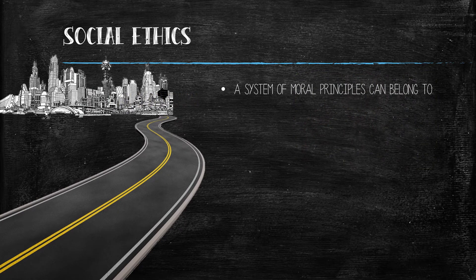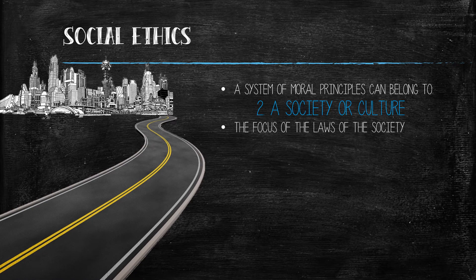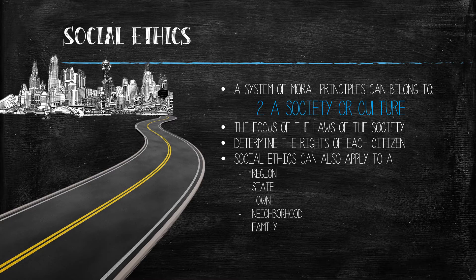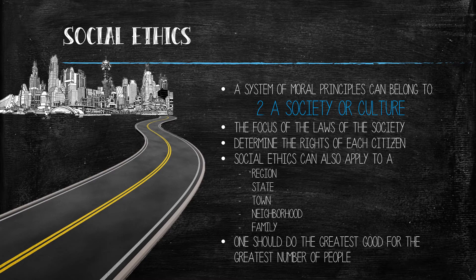A system of moral principles can also belong to a society or culture. Typically these principles are the focus of the laws of the society's government and determine the rights granted to each citizen. A similar set of principles might also apply to a region, a state, a town, a neighborhood, or even a family. Regardless, a society's set of moral principles, or social ethics, typically follow the given rule that one should do the greatest good for the greatest number of people.